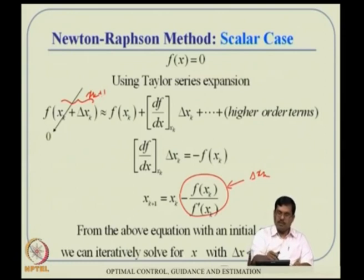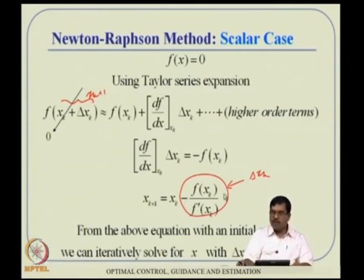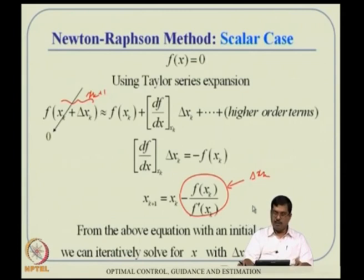So the Newton-Raphson update rule is: x_{k+1} = x_k - f(x_k) / f'(x_k). You keep iterating until convergence — that is, until there is no significant improvement from one iteration to the next.